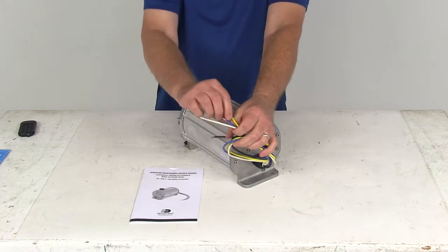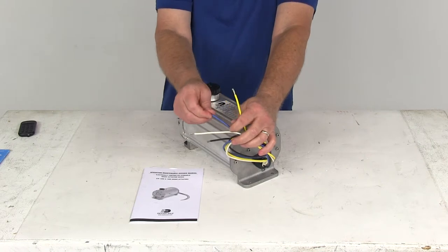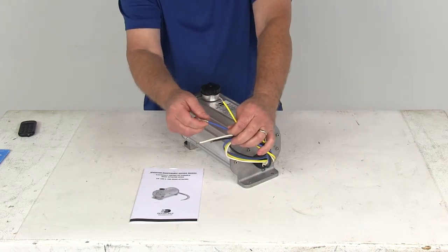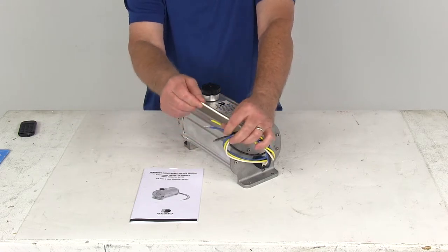The blue wire goes to the output from the in-cab controller. That's the wire that provides power for your brake controller. And then the last one is the white one, which is a ground wire.